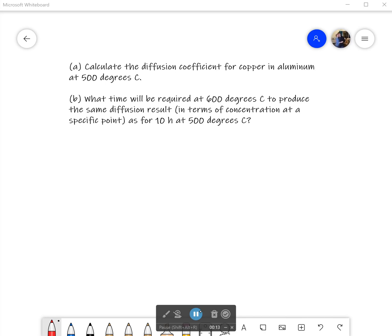It says calculate the diffusion coefficient for copper and aluminum at 500 degrees Celsius. Not too bad there. Second one is what time will be required at 600 degrees Celsius to produce the same diffusion result in terms of concentration at a specific point, as for 10 hours at 500 degrees Celsius.